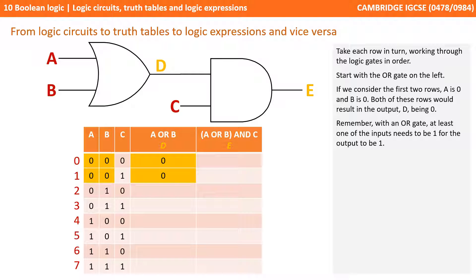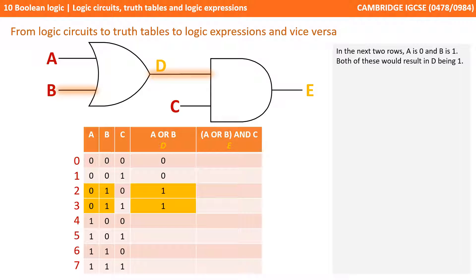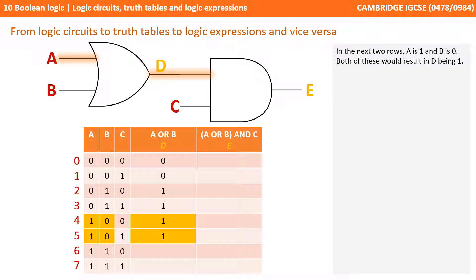We now take each row in turn, working through the logic gates in order. Starting with the OR gate on the left: when A is 0 and B is 0, D is 0. When A is 0 and B is 1, D is 1. When A is 1 and B is 0, D is 1. And when A is 1 and B is 1, D is also 1. Remember, at least one input must be 1 for the OR gate output to be 1.